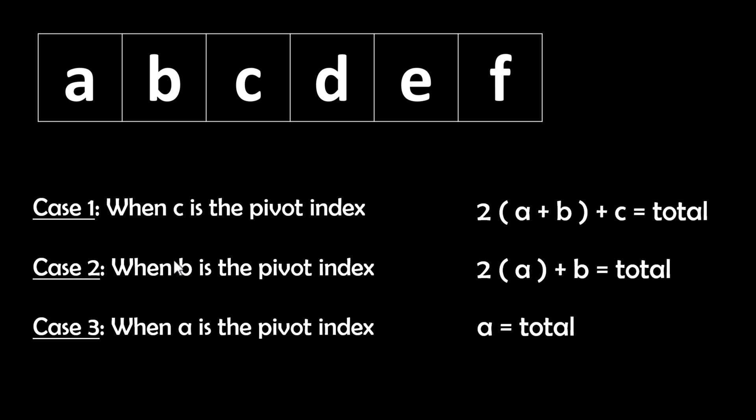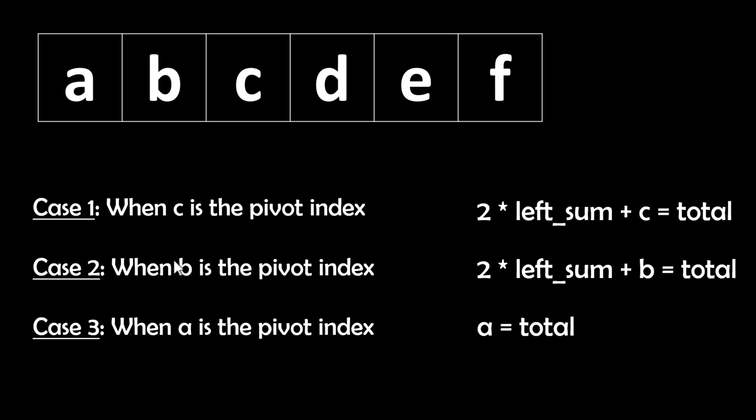The common pattern across all cases is that whatever sum we are multiplying by 2 is the left sum from the pivot index. So at any index, if 2 times the left sum plus the value at that index equals total, that index is our pivot index. This equation is straightforward to code yourself, so try coding it before continuing the video.